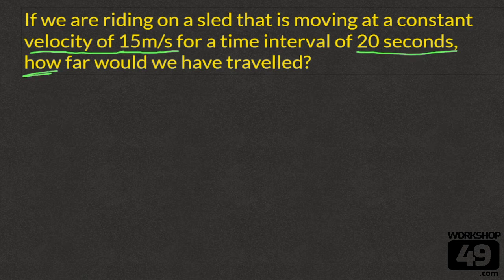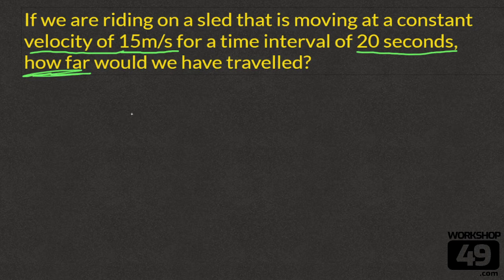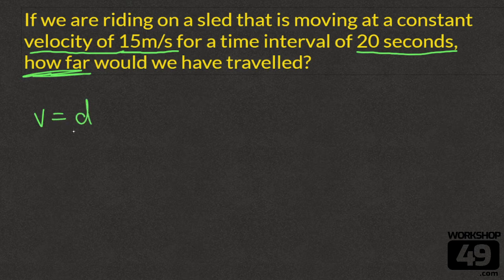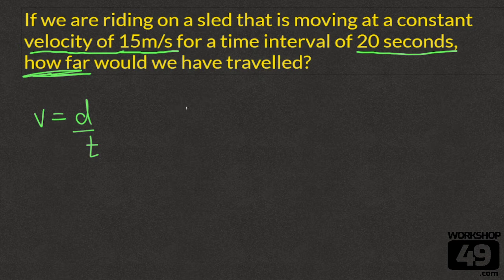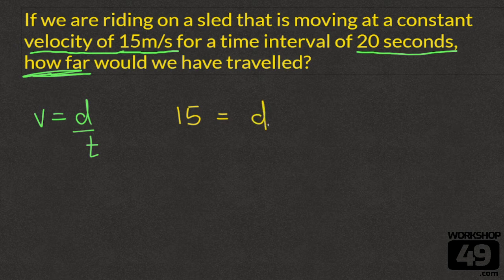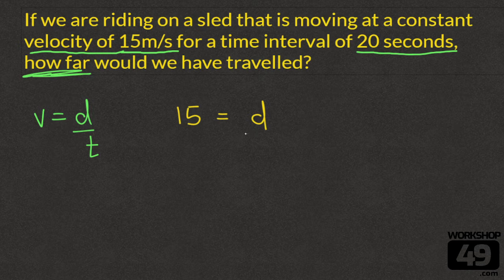And the question asks how far? That means this question is asking us to solve the distance. So we write our equation v equals d over t. We're going to fill in what we know. 15 is our velocity. This equals d for our distance, and we don't know what that is. That's what we're looking for. Divided by our time which is 20.